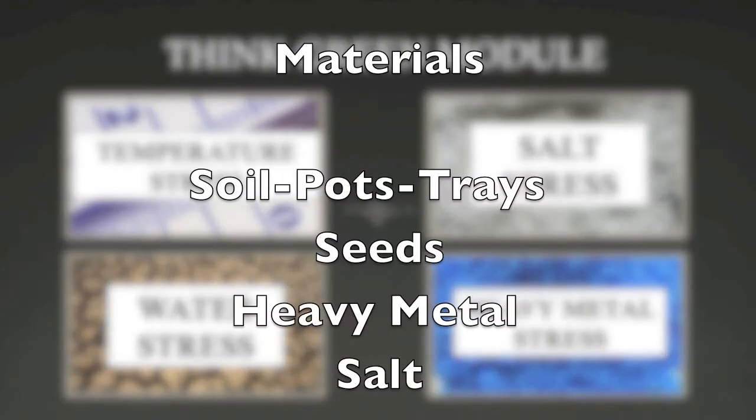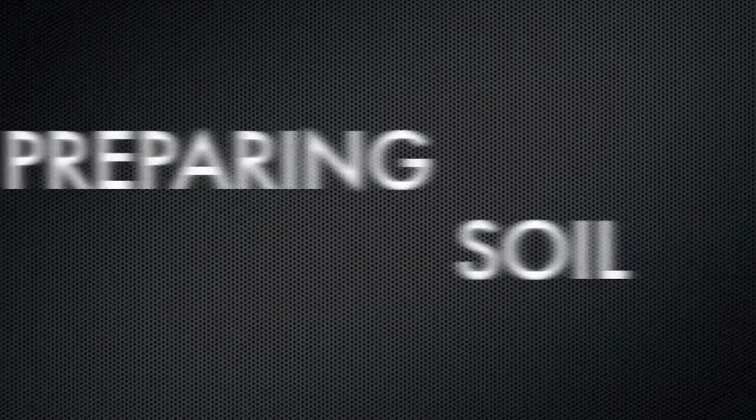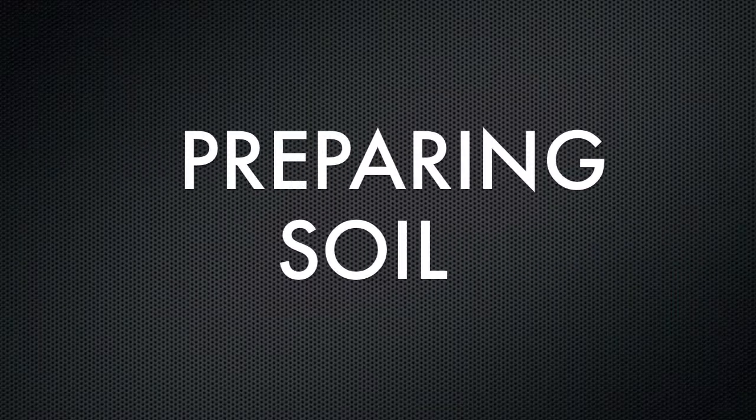For this module, you will need everything required to grow plants including soil, pots, and trays, the seeds provided to you, heavy metals such as nickel or copper sulfate, and salt. Once you've gathered all the materials, you're ready to get going.